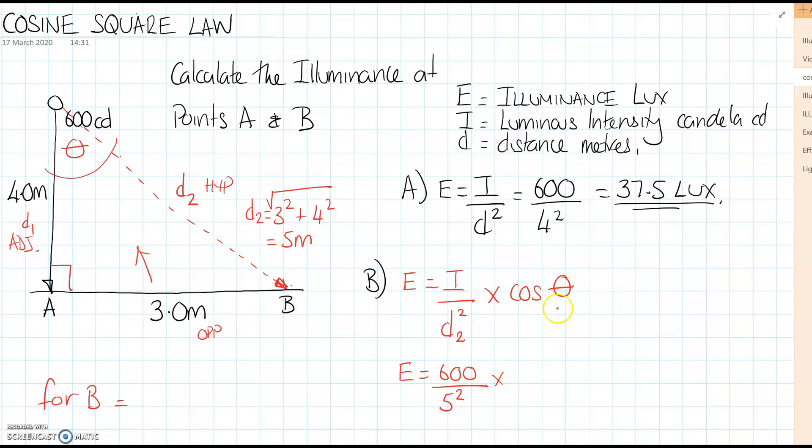So in this case that's going to be 5 squared times the cosine. Now the cosine is adjacent over hypotenuse. We know the adjacent side is 4, divided by the hypotenuse which is 5. So 4 over 5, which is 0.8.